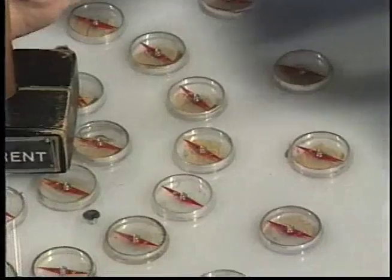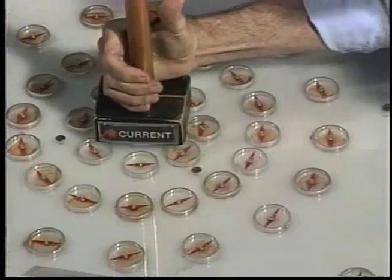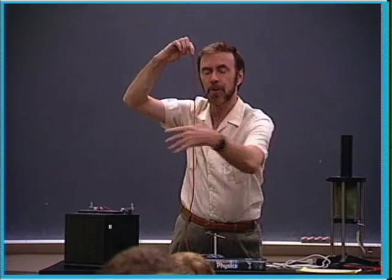But you know what would happen if I put a current through that wire? Bam! All the compasses will line up with the field. It turns out that field takes the shape of concentric circles around the wire.